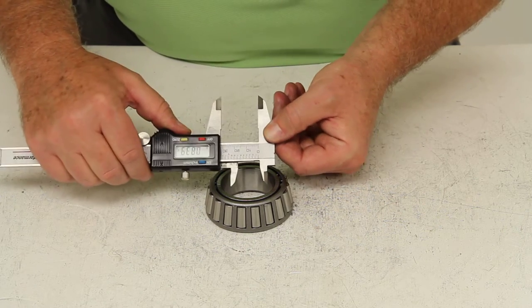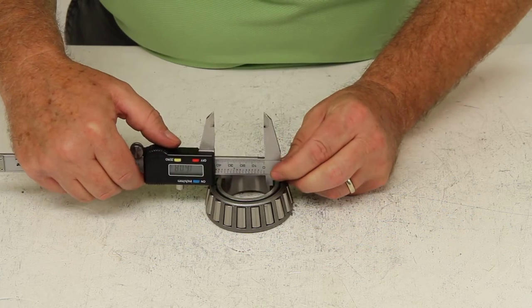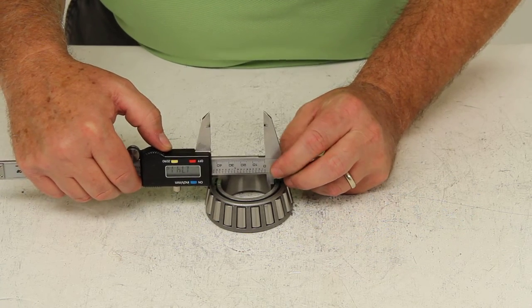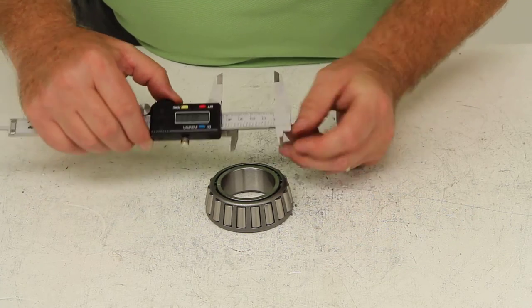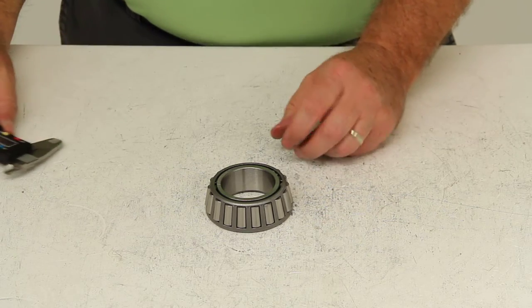So in this case if we put the digital caliper on the inner portion, that would measure 1.750 inner diameter.